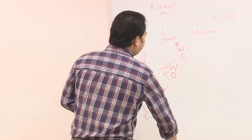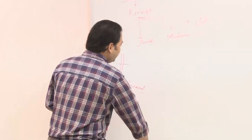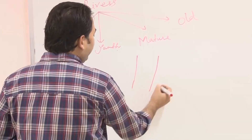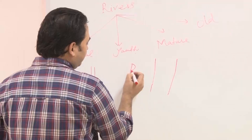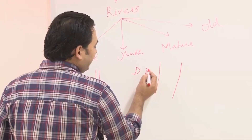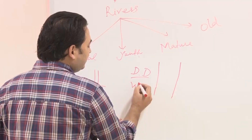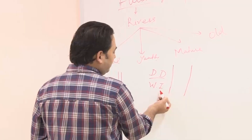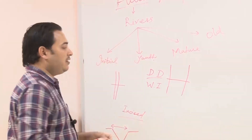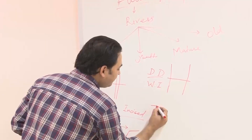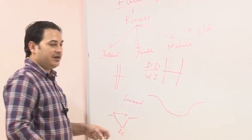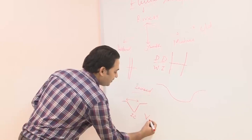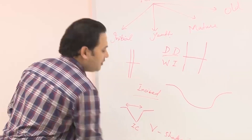In the mature stage, channels become wider and less deep. Depth decreases and width increases. If you take the cross-sectional profile of this channel, it will be like U-shaped valleys. In the youth/initial case, we get V-shaped valleys, and in the mature case, U-shaped valleys.